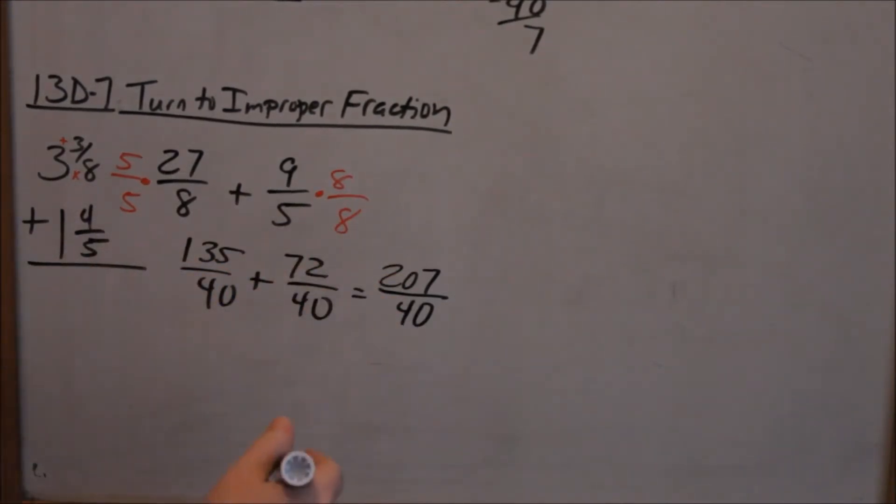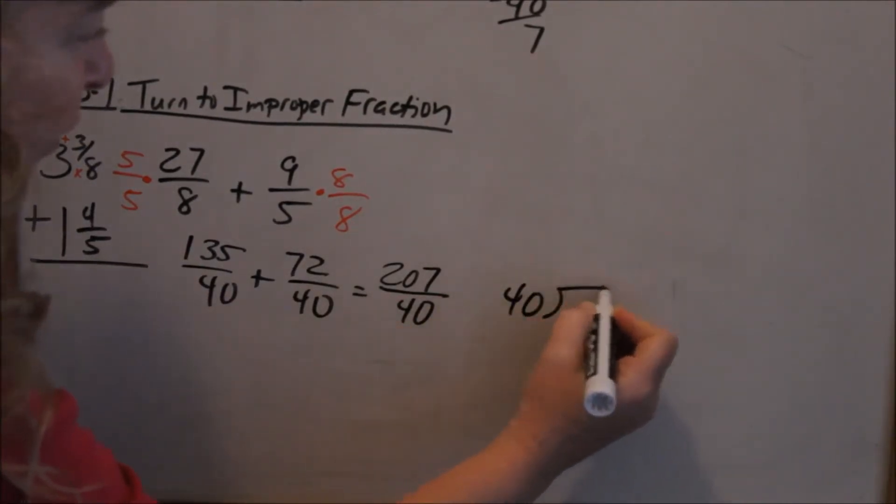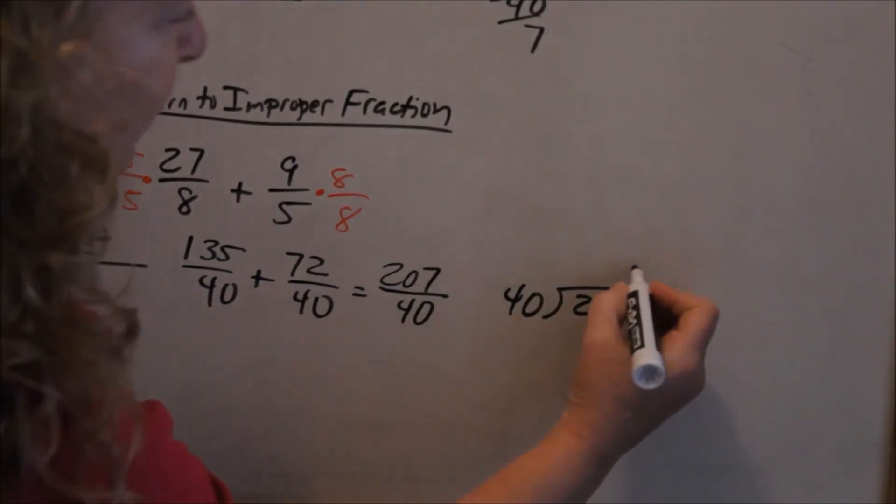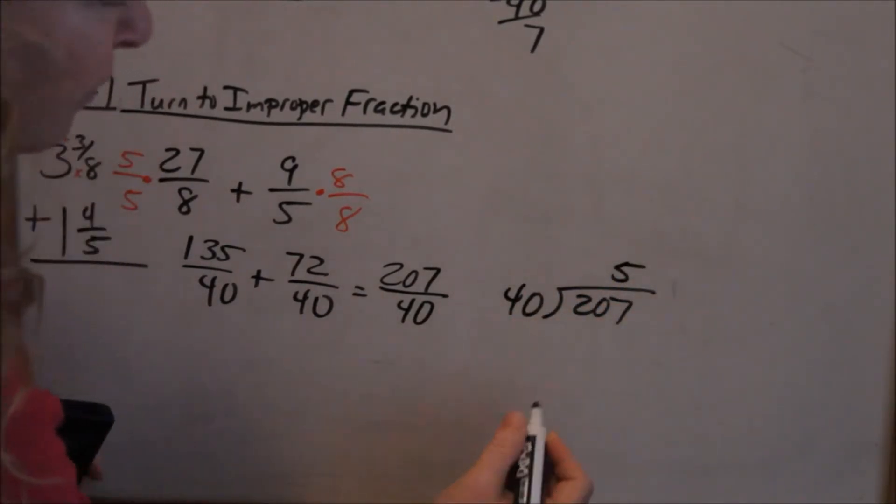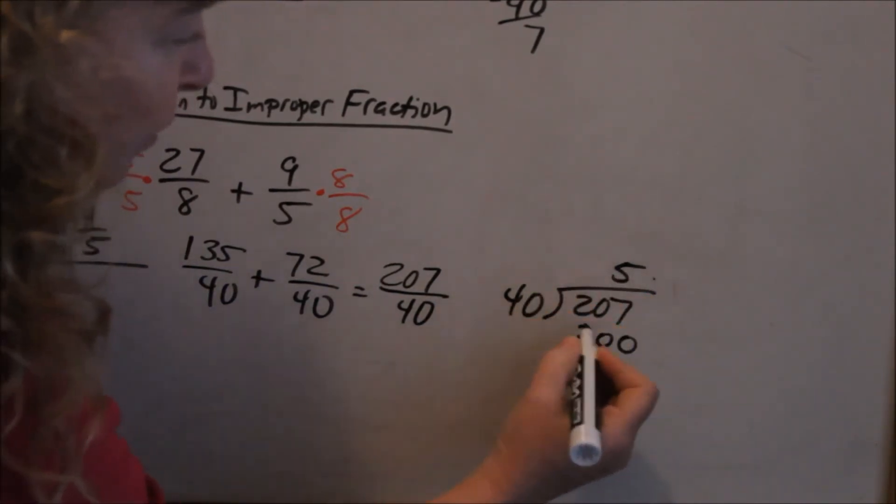Now change this back into a mixed number, which is 40 into 207. 207 divided by 40, the most times 40 goes into 207 is 5, 5 times 40 is 200, because 5 times 4 is 20.